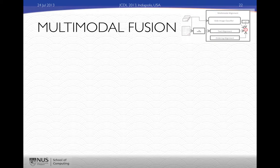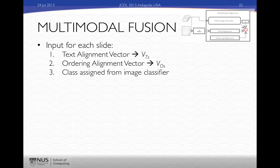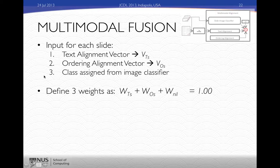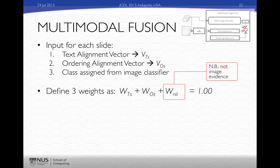In the multimodal fusion stage, we take the slide image classifier information as deferred input, and also include the text alignment vector and the ordering alignment vector — our monotonic preferences — as input. We take three weights, WTS, WOS, and WNU, which sum to 1. These weights are used for deciding which type of slide and where it should be aligned. Note that WNU is not image evidence — it's the weight assigned to favor nil classifications, that is, whether a slide should not be aligned to anything.